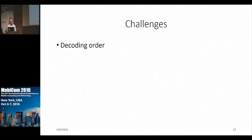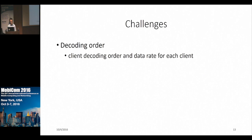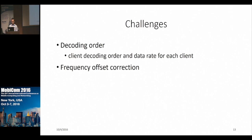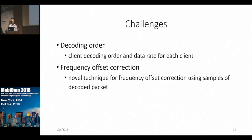Now, what are the challenges to implement this protocol? One challenge is determining which client to decode at which AP and in which order, and what the data rate for each client should be. Another problem is frequency offset correction, because we are decoding the packet at one AP but cancelling it out at another AP, so we need to be very precise about the frequency offset. To do that, we used the decoded samples of the packets to get a better estimate of the frequency offset.